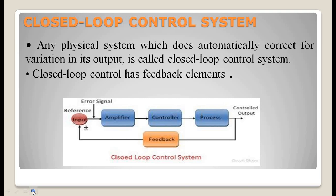Any physical system which does automatically correct for variation in its output is called a closed loop control system. It has a feedback element. The main difference from an open loop system is that a closed loop system has a feedback loop which continuously gives the difference between the desired output and the actual output, allowing a change in input accordingly. A feedback loop is present, which provides a reference signal; an error signal is generated, amplified, and fed to the controller, then to the process, giving a controlled output.